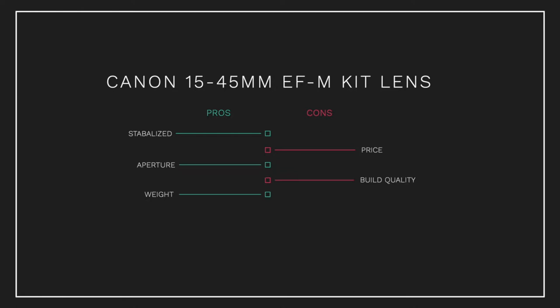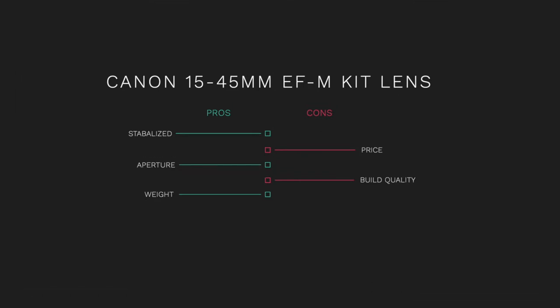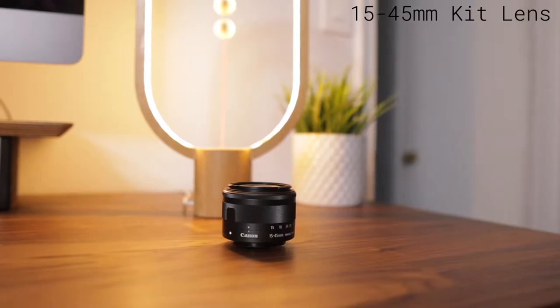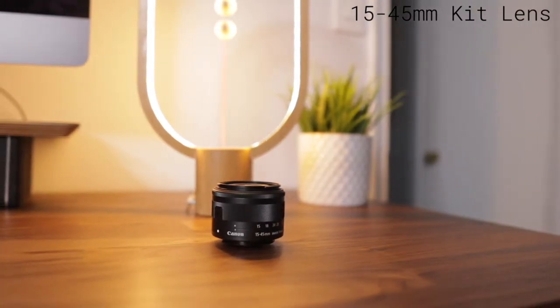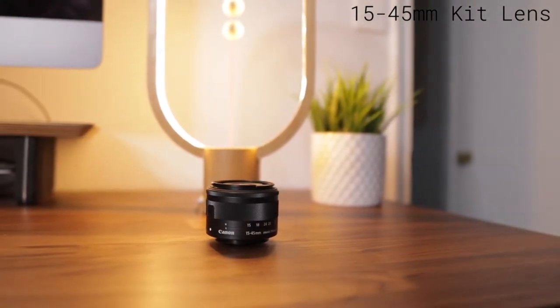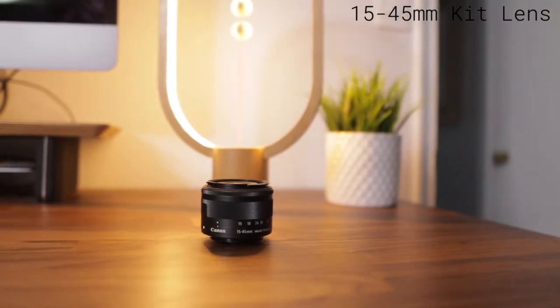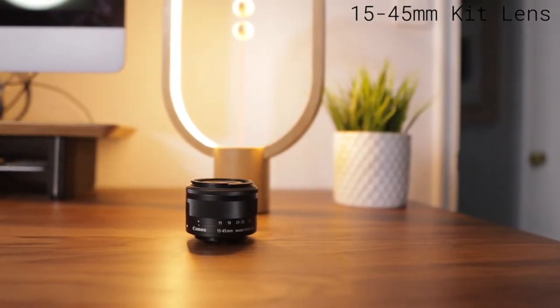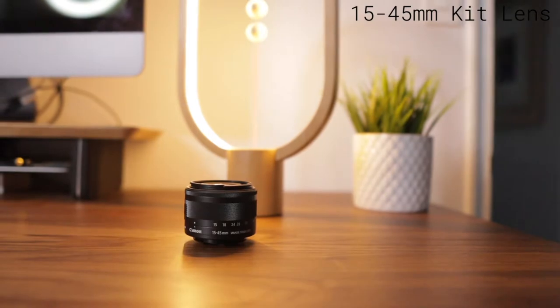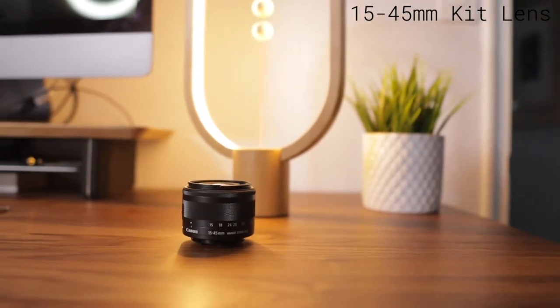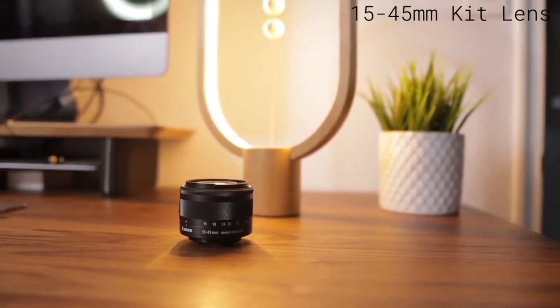Another con with this lens is that the quality is not the best — it's nice, but not as good as the Sigma 16 millimeter lens. When comparing it to the Sigma, the maximum aperture of f/3.5 is a negative, but normally that can actually be seen as a pro, especially when compared to the 10 to 18 millimeter which has a maximum aperture of f/4.5.